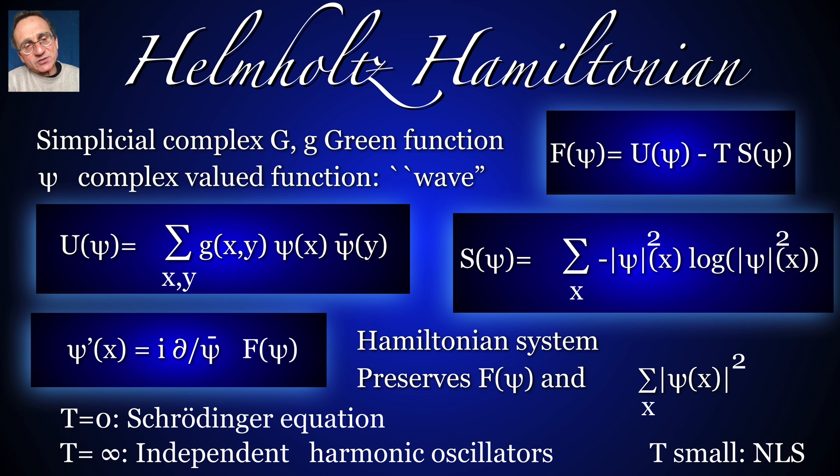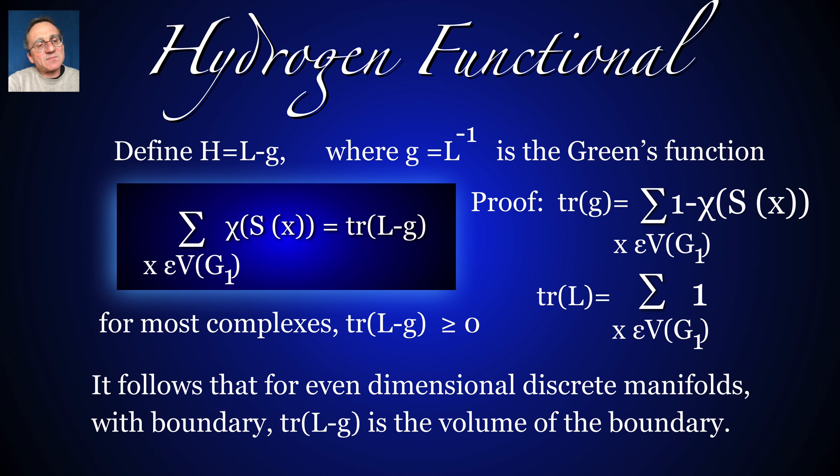And we can also look at them. I got interested in that because it's not only space, right? Euler characteristic deals with space. But if you look at a wave moving, then you get a probability measure, which is quantum mechanics, which is the sum of the squares of the amplitudes of the wave. And so we can look at dynamical systems. We can look at Schrodinger equation. We can also look at non-linear Schrodinger equations, which is here. Helmholtz Hamiltonian is a nice choice. And it's an integrable system, non-linear Schrodinger type system. And so this is another functional, which I think is interesting. It's called the hydrogen functional. It's also motivated by physics.